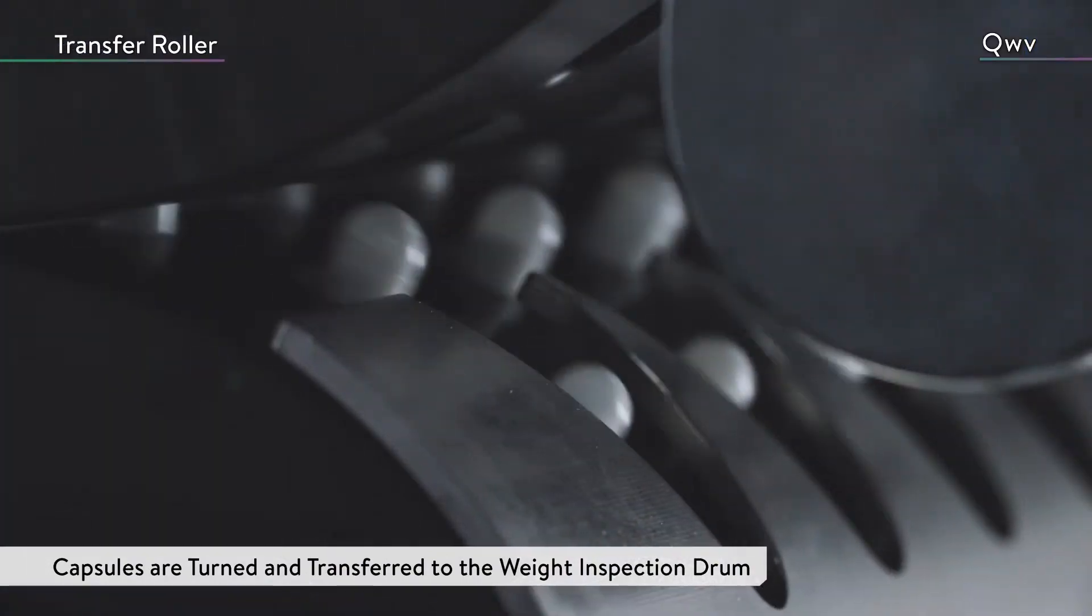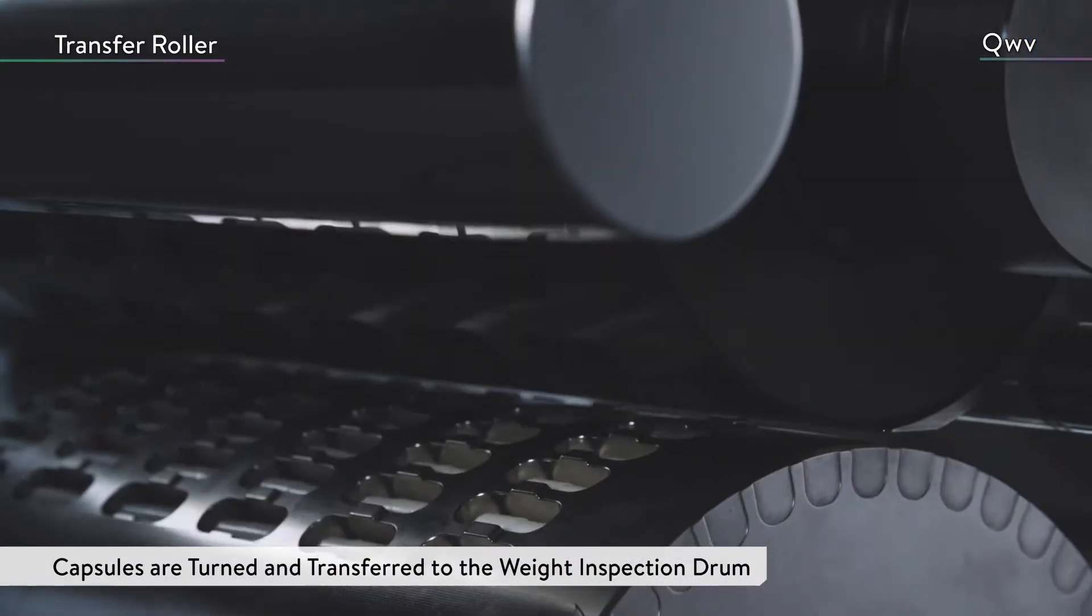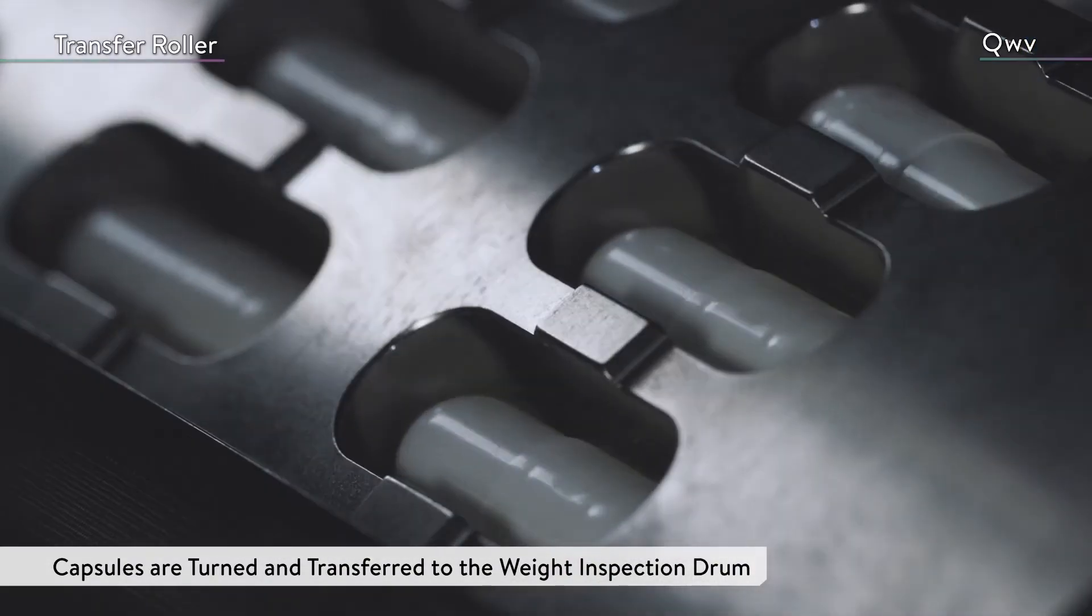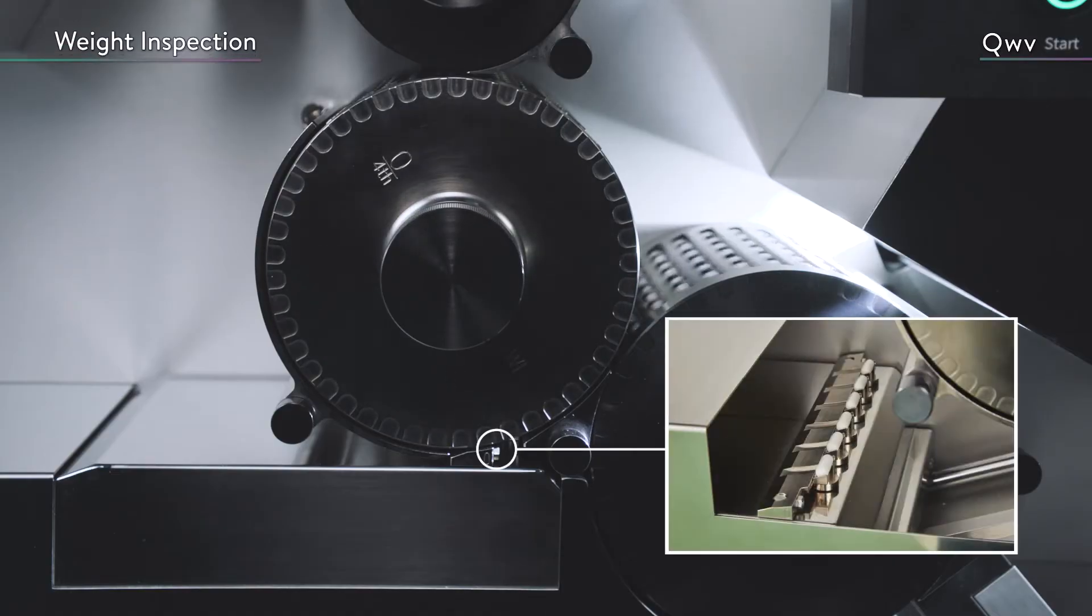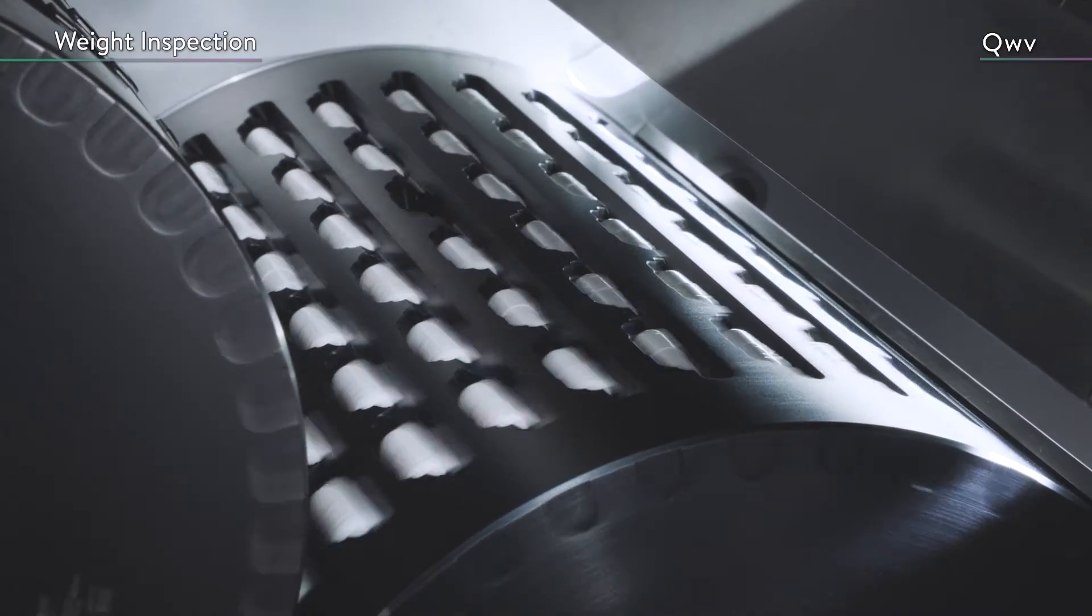The capsules are turned on their sides by the transfer roller and transferred to the weight inspection drum. All of the capsules are screened by weight with a high precision scale. Next, they are transferred to the side inspection drum.